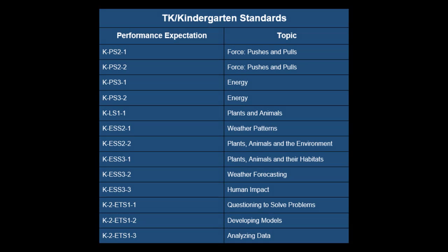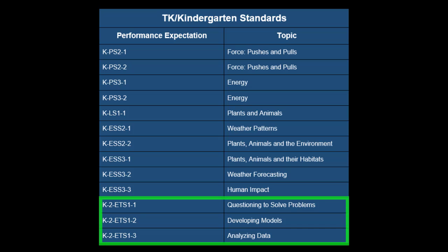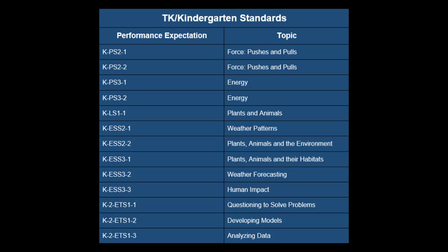Next, let's look at the PEs that kindergarten teachers are responsible for. If you take a look at the chart, you can see all of the PEs for your grade level. The three PEs at the bottom are grade-banded K-2. These are the engineering PEs, and are the same three engineering PEs that students will see in grades kindergarten through second grade. The next grade band, grades three through five, will have another set of engineering standards, the same as middle school and high school. Continuing on with kindergarten, there are four physical science PEs, one life science PE, and five earth and space science PEs.